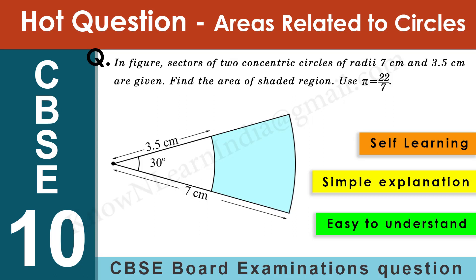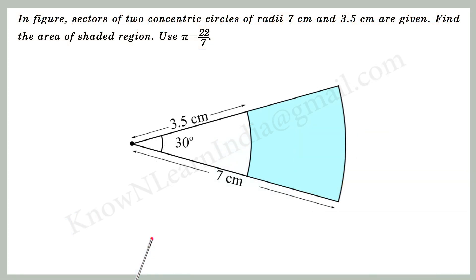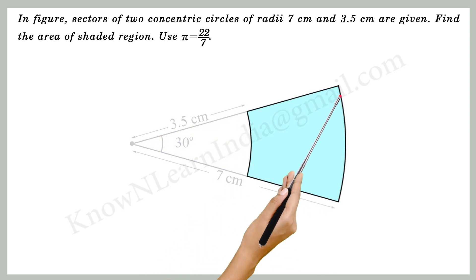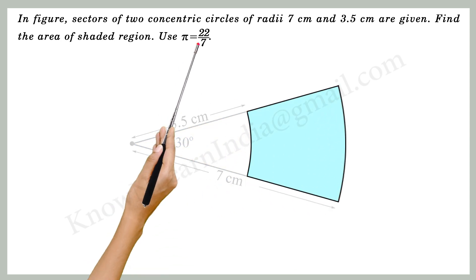Hello friends, in this session we are going to solve a question from areas related to circles of class 10. In the given figure, sectors of two concentric circles of radii 7 centimeter and 3.5 centimeter are given. Find the area of the shaded region. Use pi is equal to 22 by 7.